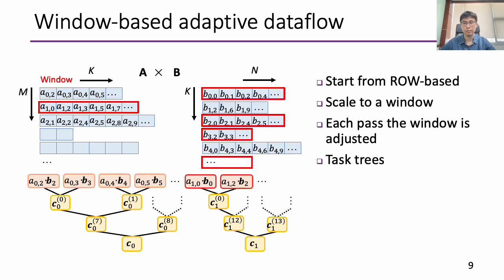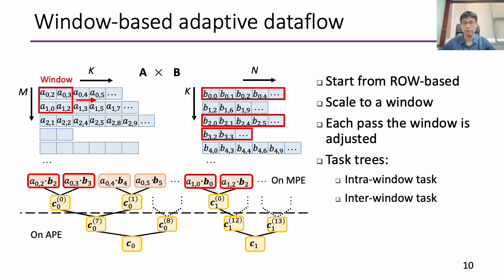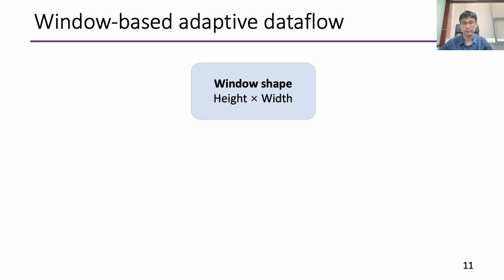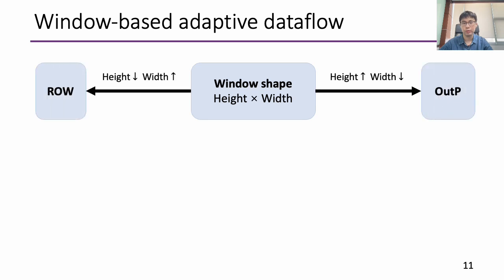When finishing an iteration of k, the window shape can be adjusted with respect to a fixed window size. For example, we adjust the window from 2x2 to 1x4. The whole SpGEMM computation forms many task trees, with scalar-vector multiplications as red nodes and reductions as yellow nodes. Each task tree represents a computation for a single row in the A matrix. We divide those task trees into intra- and inter-window tasks and place them onto heterogeneous units. By adjusting the window shape, we can approach the row-based data flow by reducing height and increasing width.